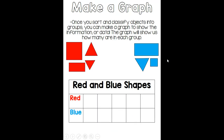The last thing I want to talk about is making a graph. Once you sort and classify objects into groups, you can make something called a graph to show the information, or the data. The data is the information you get from sorting. So once you sort the objects, now you have some information about how many objects are in your group, and the graph is going to show us how many are in each group.